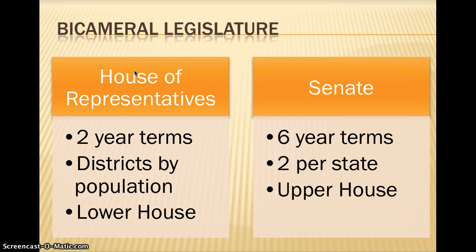What they decided on was a bicameral legislature, which means a two-house legislature. The states were arguing about whether representation should be based on the states or on population. The bigger states wanted it based on population whereas the smaller states wanted it based on states, and what they came up with was the Connecticut Compromise, which said there would be two houses to Congress. The upper house, or the Senate, would be represented by state, and the lower house, or the House of Representatives, would be represented by population.